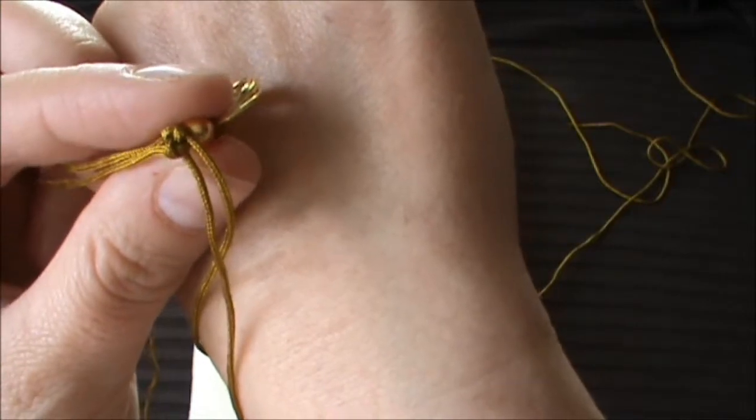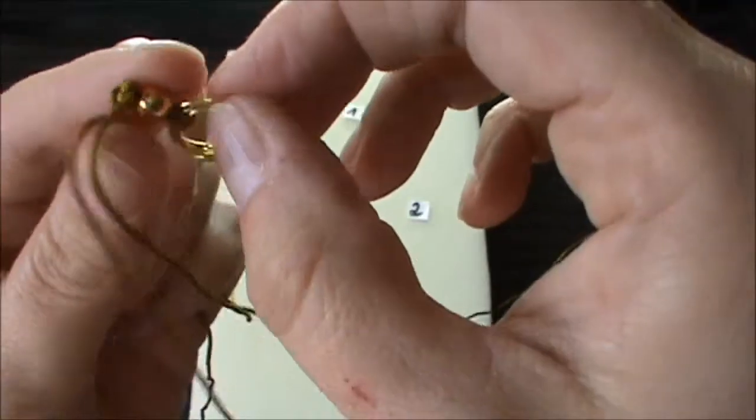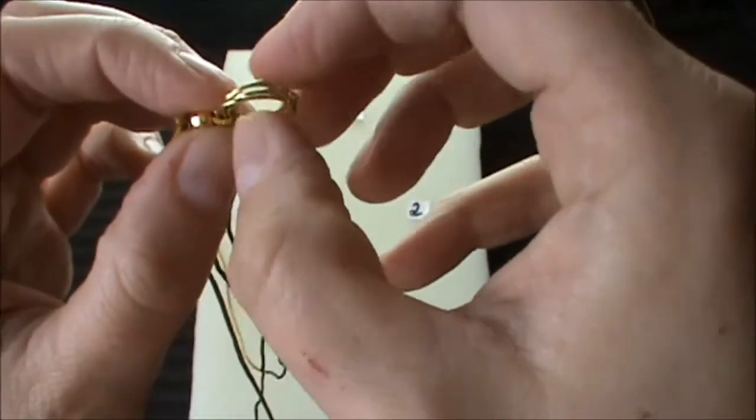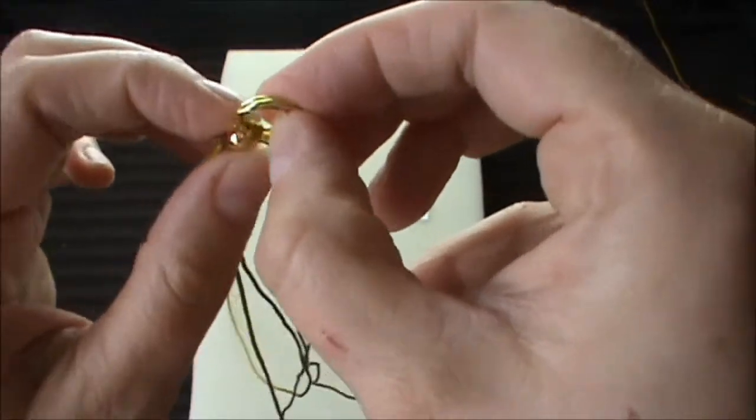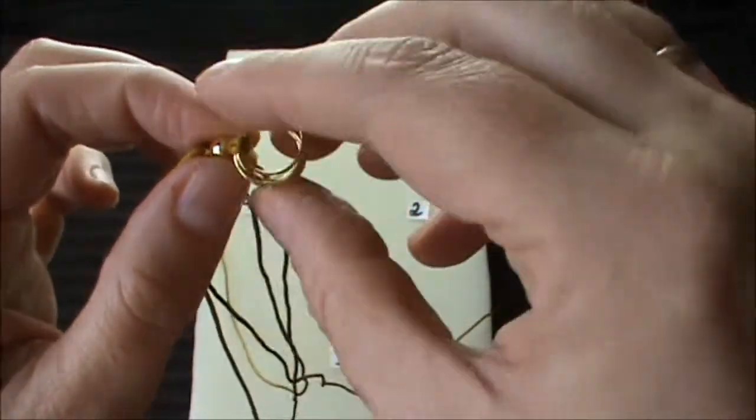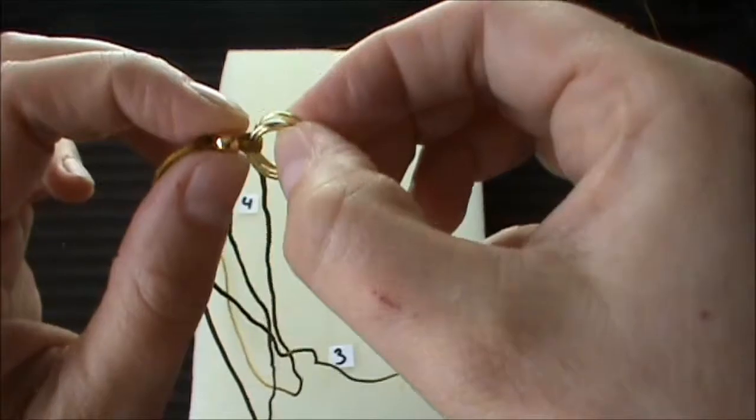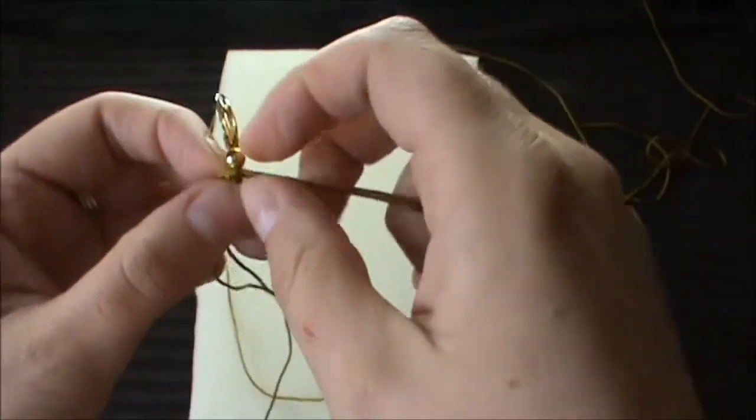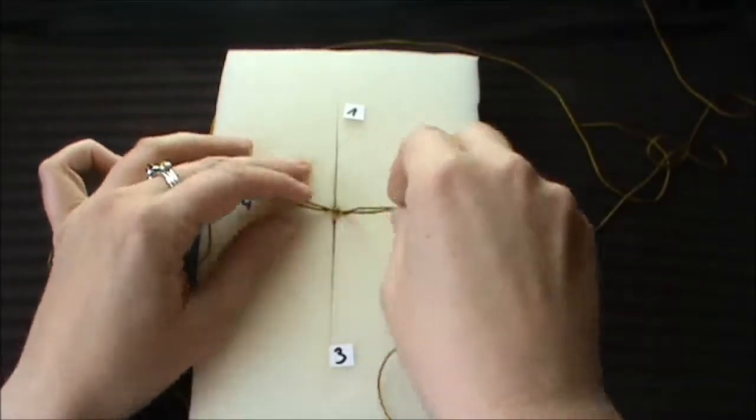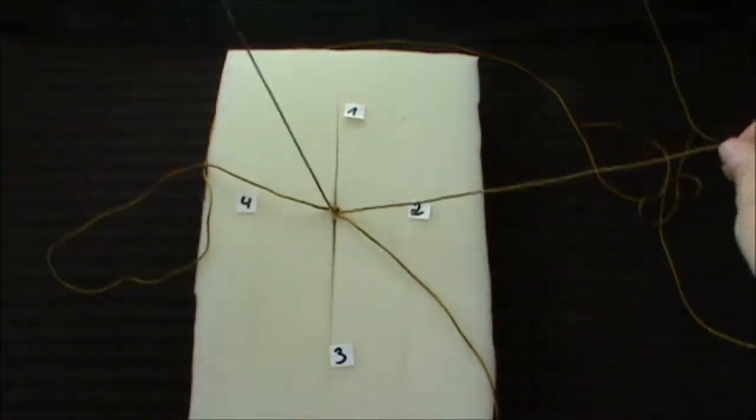And now you can pull all four strings together equally. So this is how the knot should look like. The first knot shouldn't be pulled too tight so the loop can still move in the thread cord. So fit it back into your helping hand.